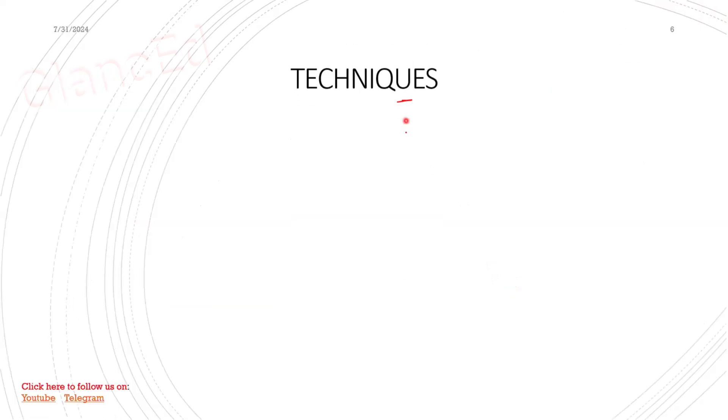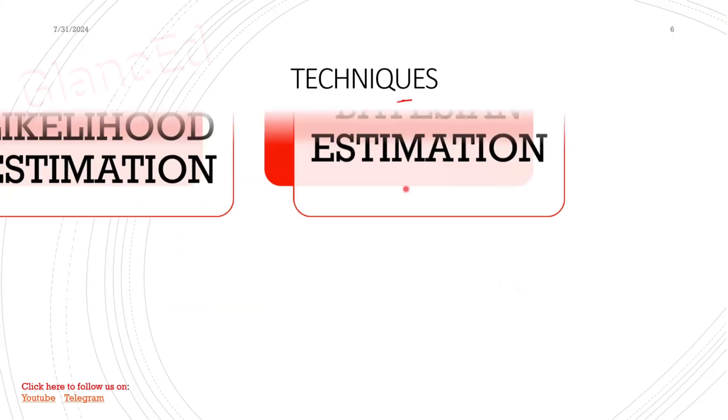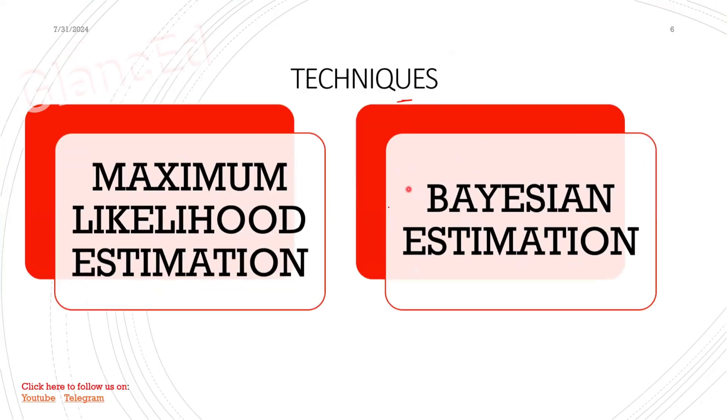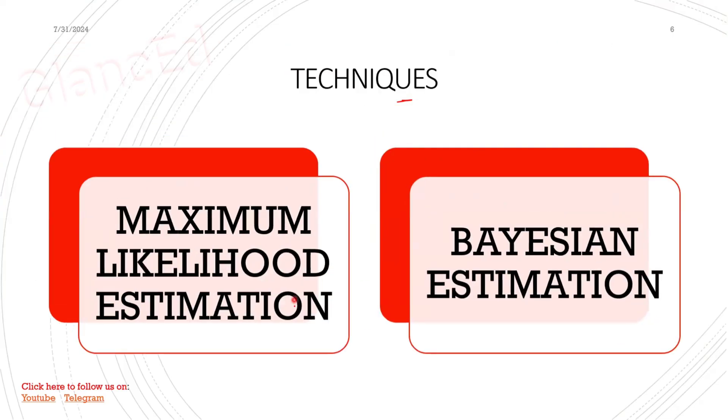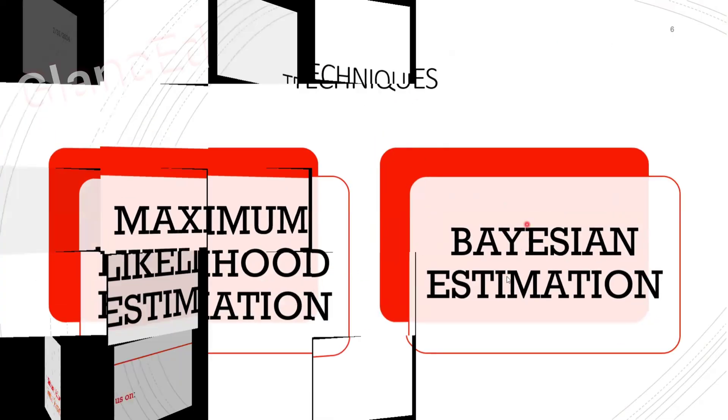So there are two techniques for parameter estimation: Maximum Likelihood Estimation and Bayesian Estimation. Now let's look at each of them.